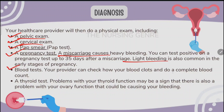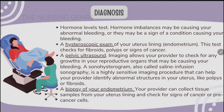Blood tests include a complete blood count (CBC) and thyroid test, as problems with thyroid function may indicate a problem with ovarian function causing the bleeding. Hormone level tests for estrogen and progesterone can identify hormonal imbalances causing your abnormal bleeding. Platelet counts from CBC are also checked. A hysteroscopic exam of the uterus lining (endometrium) can also be performed.